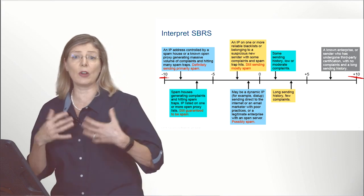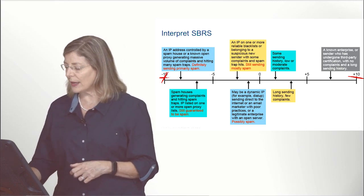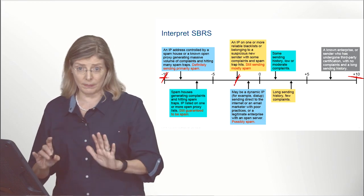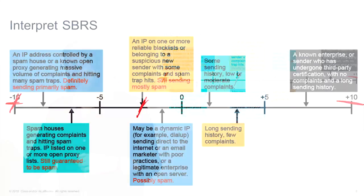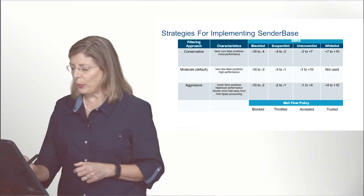Talos gives a score to senders between minus 10 and plus 10. Between minus 10 and minus 3 it's considered spammers, so by default we will not accept their connection. If it's minus 3 to minus 1, it's considered suspect — we'll accept the connection but start throttling it. Anything from minus 1 to plus 10 is considered unknown, meaning they are not known to be spammers. However, emails from unknown senders will still be filtered through dynamic spam checking, antivirus, and other processes.